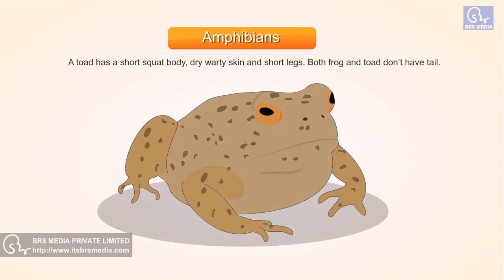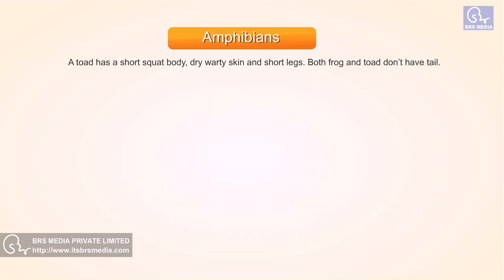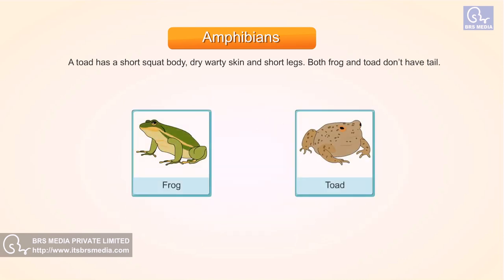A toad has a short squat body, dry warty skin, and short legs. Both frog and toad do not have a tail.